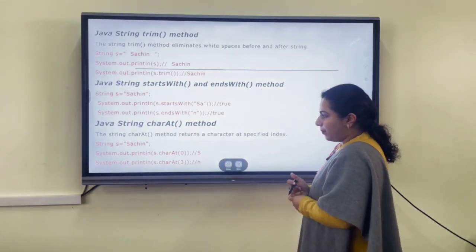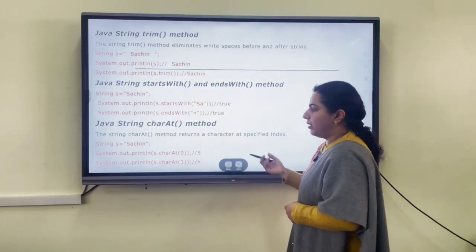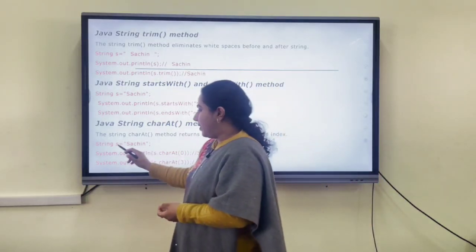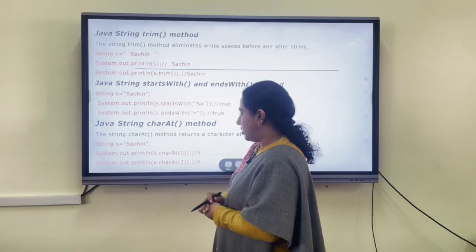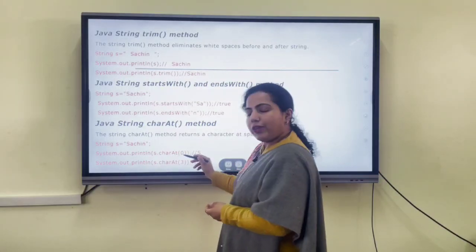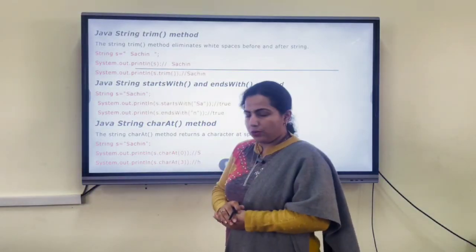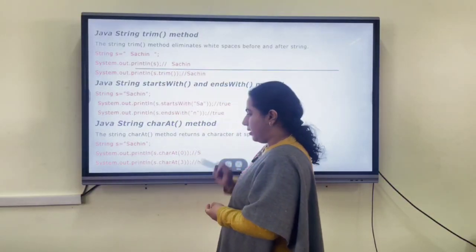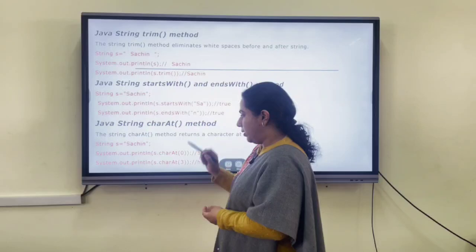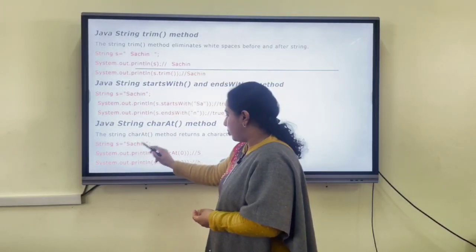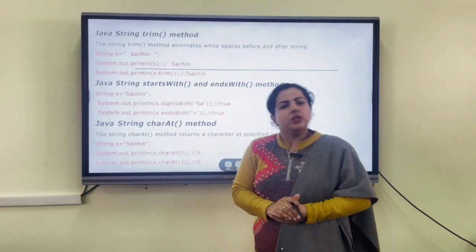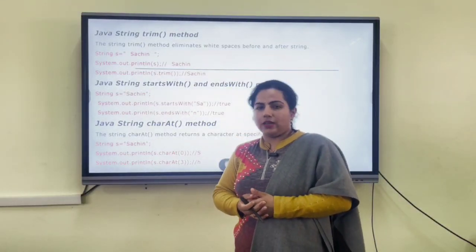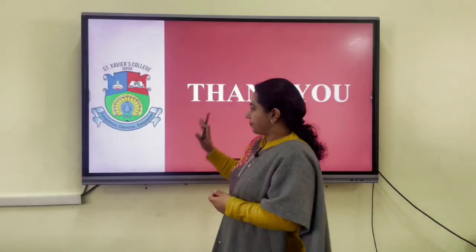Next is the charAt() method. The charAt() method returns the character at the specified index. For example, if the string s equals "Sachin", calling s.charAt(0) returns 's' since the index starts at 0. Calling s.charAt(3) returns 'h' (indices 0=s, 1=a, 2=c, 3=h). There are various other methods associated with Java strings that we will discuss in the next class. Thank you.